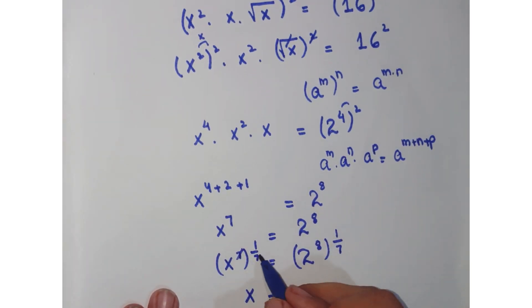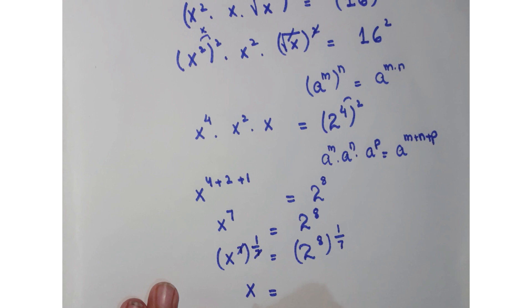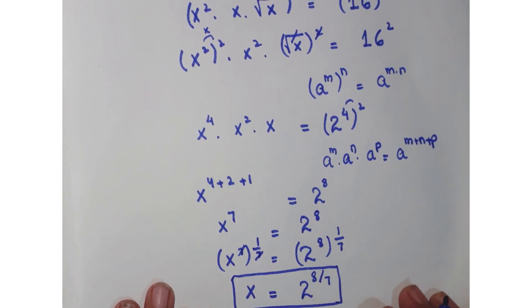So you are left with x = 2^(8/7) and this is your required answer. I hope you understand the question and if you like it, kindly subscribe to my channel. Thank you.